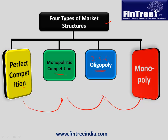These are the four major market structures, and a color theme will be kept constant throughout this presentation: yellow for perfect competition, green for monopolistic competition, blue for oligopoly, and red for monopoly.